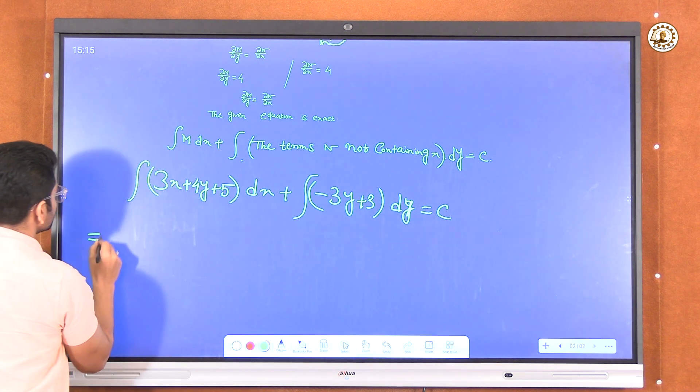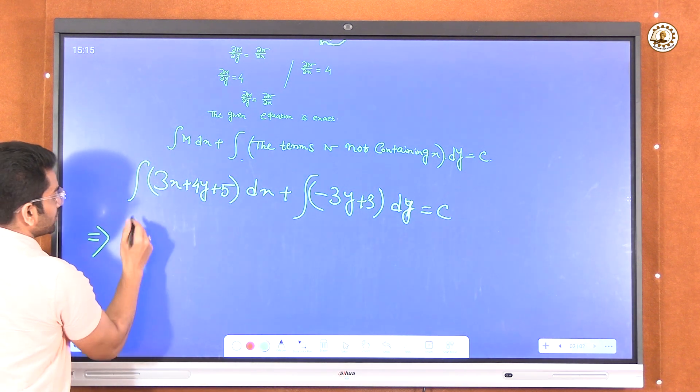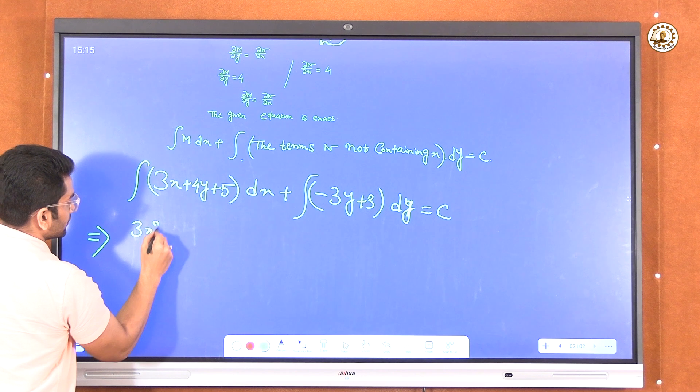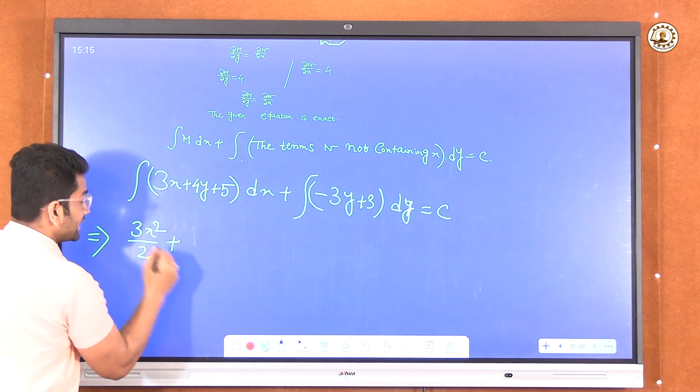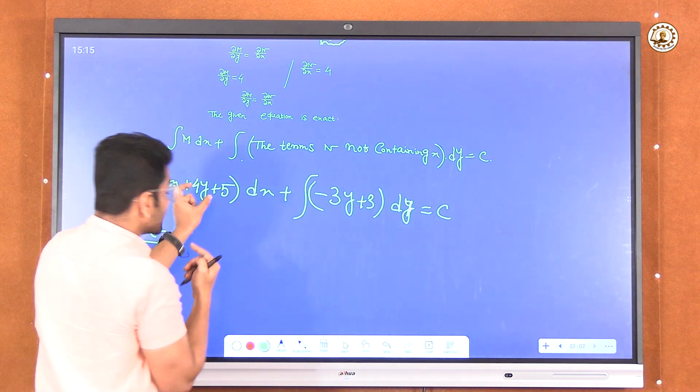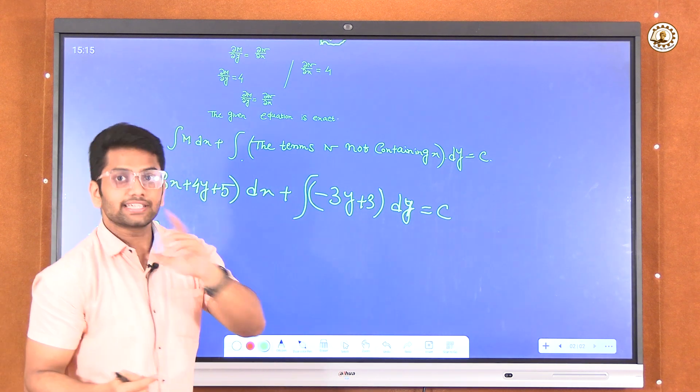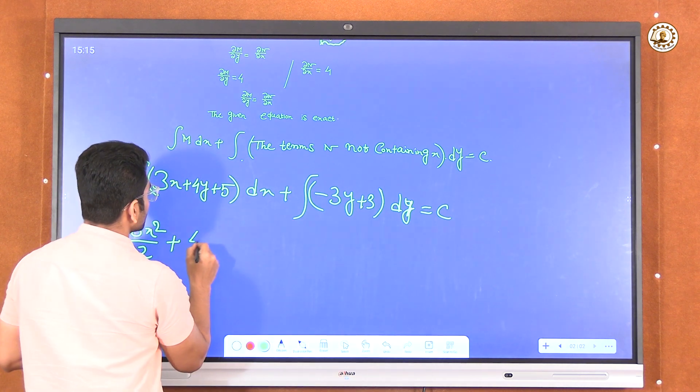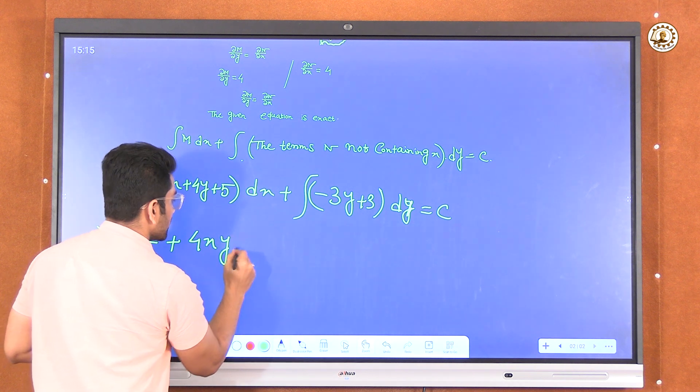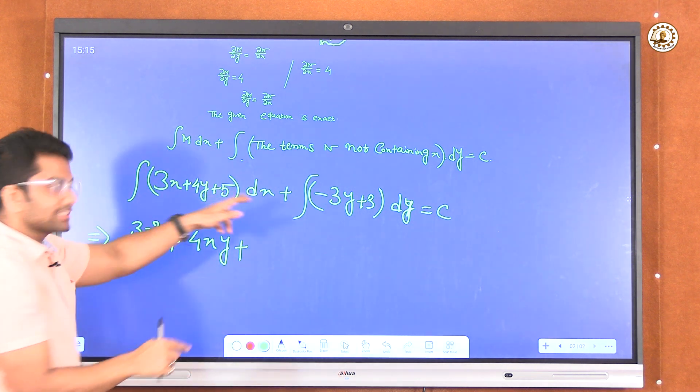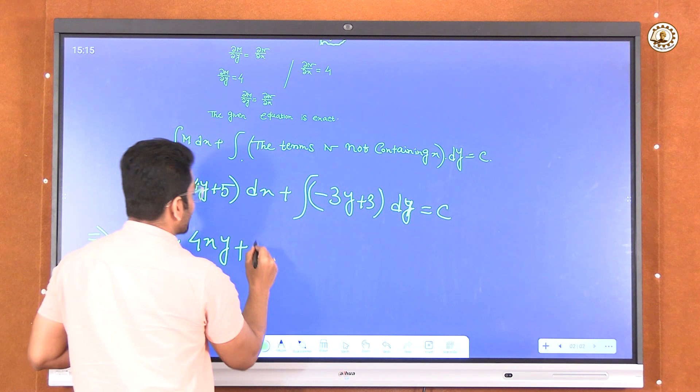Now the integration of 3x will be 3x²/2. Integration of 4y dx, 4y will be treated as constant, so integration of dx is x, so it will be 4xy plus integration of 5 dx will be 5x.